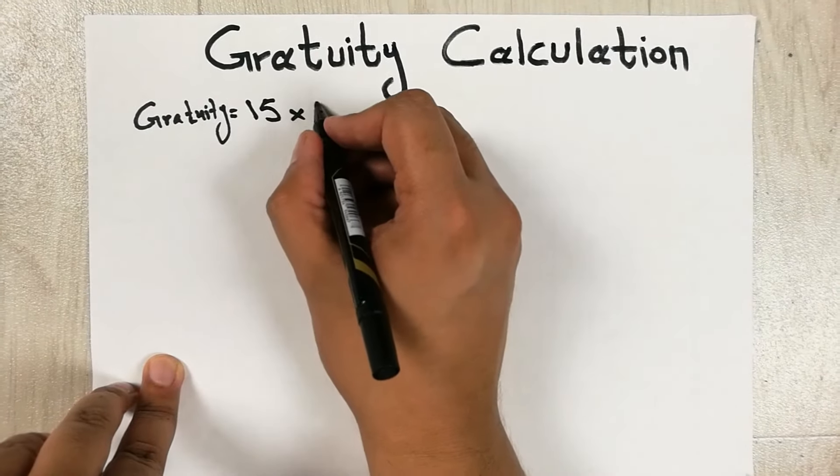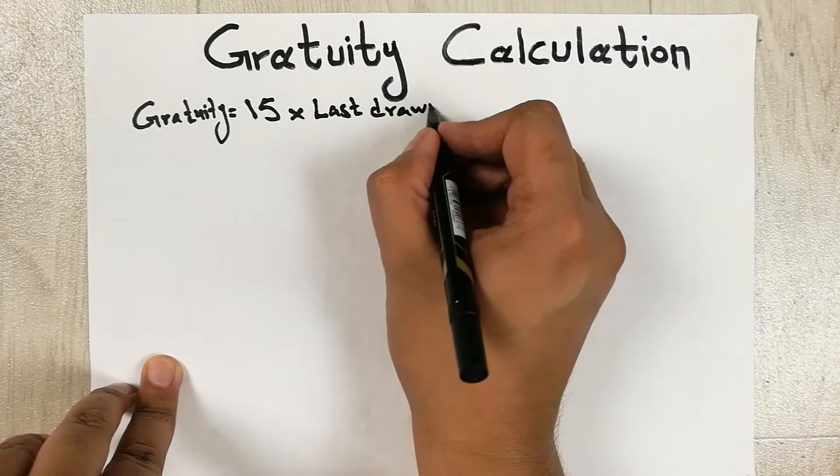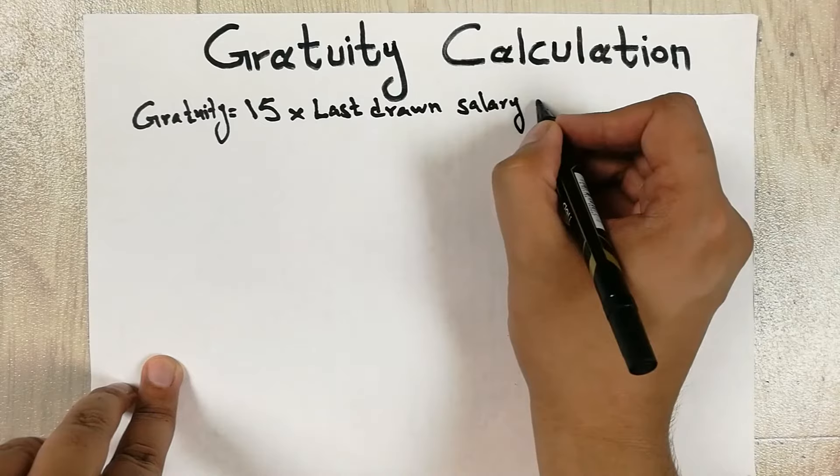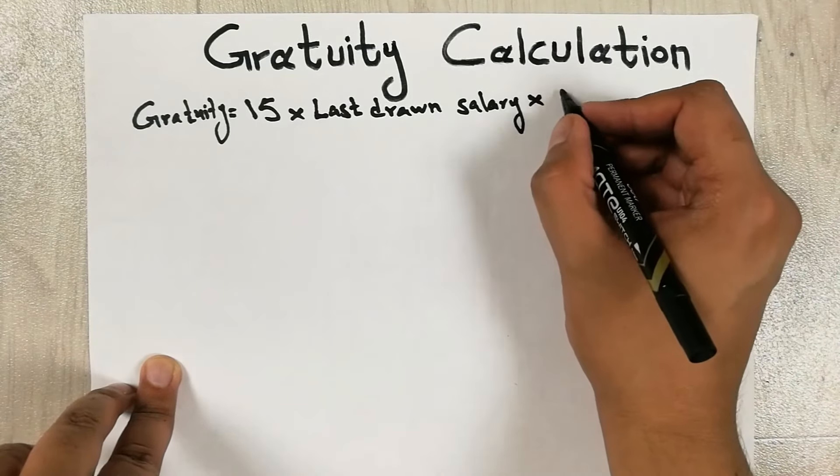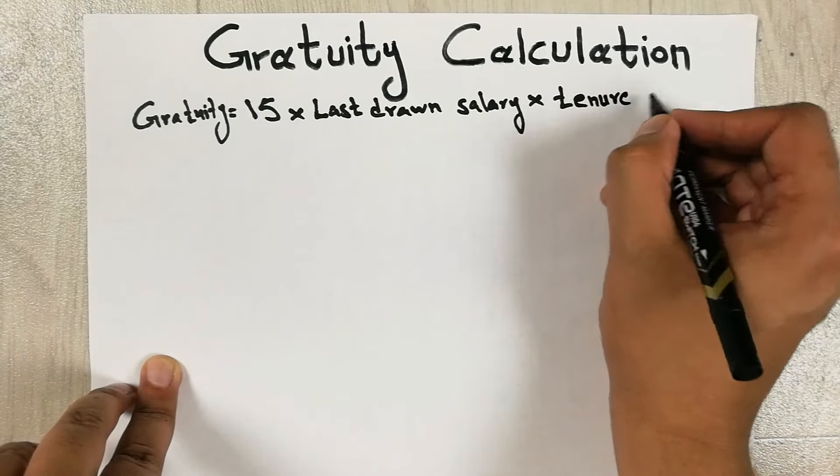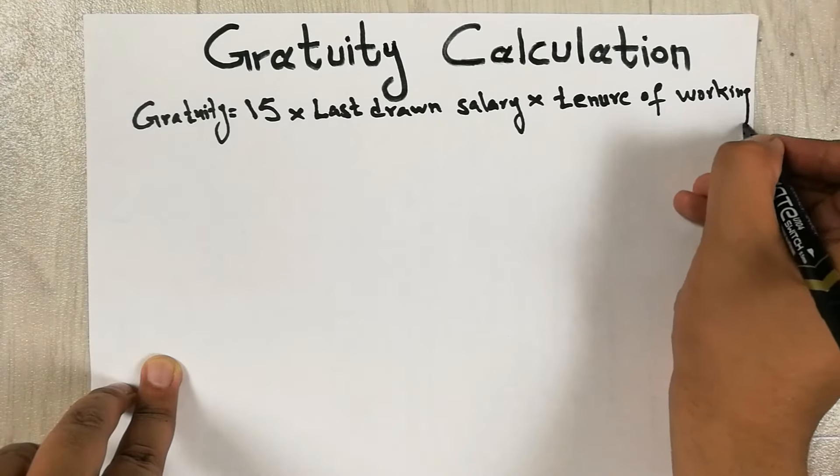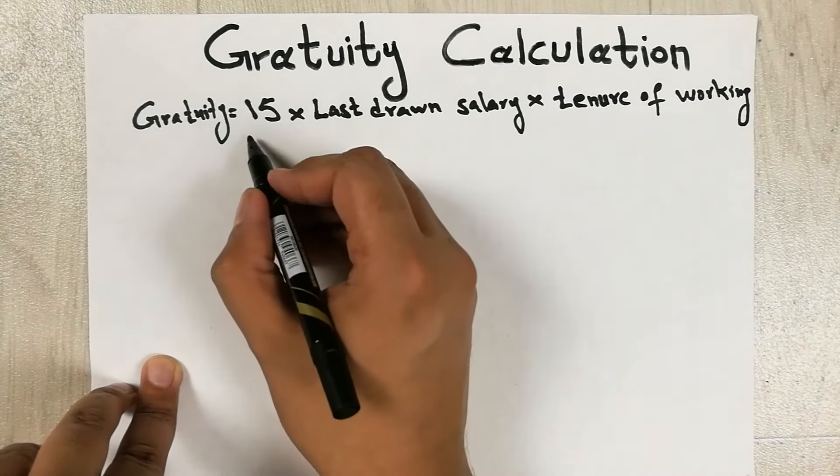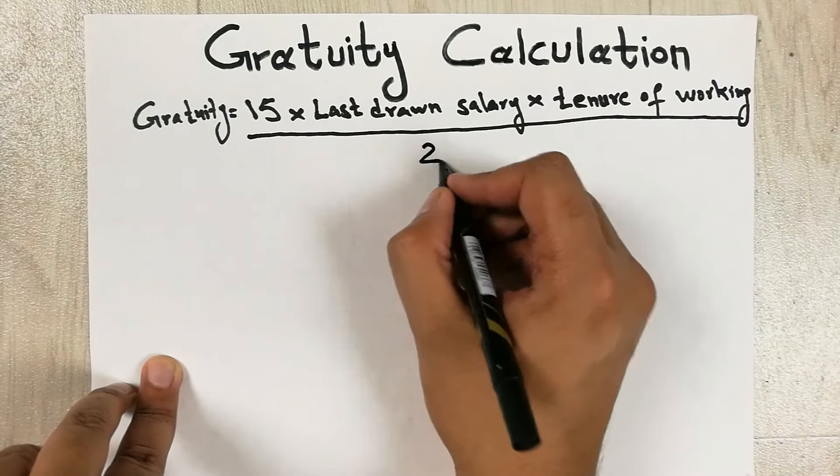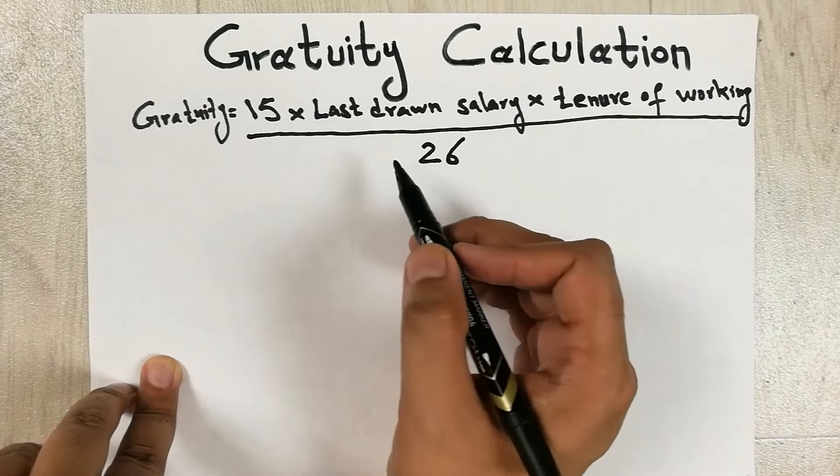So last drawn salary, then again multiply with tenure of working, and then we divide it with 26. So guys, I will explain all of these terms one by one.